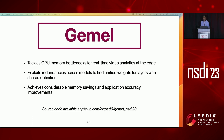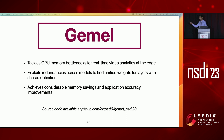In conclusion, GEMO tackles GPU memory bottlenecks for real-time video analytics. It exploits redundancies across models to find unified weights for layers with shared definitions, providing memory savings and improvements in application accuracy. Our source code is available at the provided link. Thank you so much for your time, and I'm happy to answer any questions.